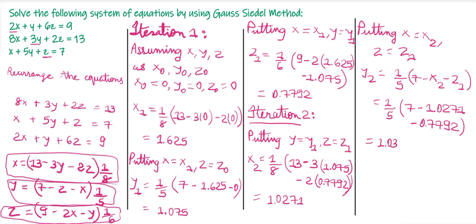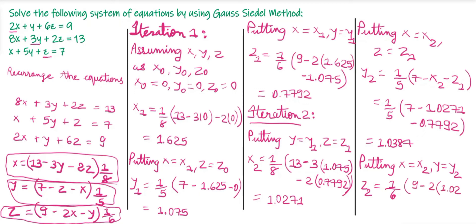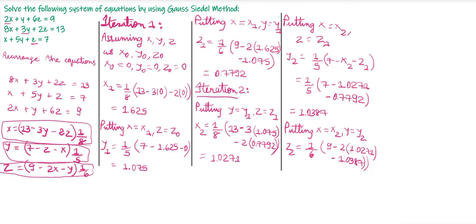Then substituting x = x2 = 1.0271 and y = y2 = 1.0387, we find z2 = (1/6)(9 - 2×1.0271 - 1.0387) = 0.9845. Observing x1, x2, y1, y2, z1, z2, they are not nearly equal, so we proceed to the next iteration.